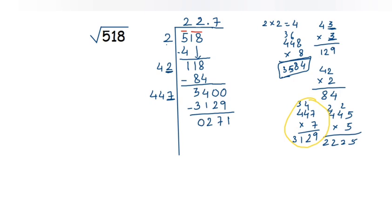Now suppose we want one more digit after the decimal. The decimal point is already in place, so we take two more zeros, making the new dividend 27100, and continue with the same procedure.